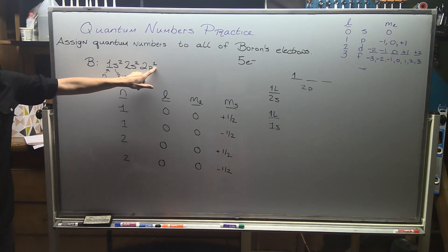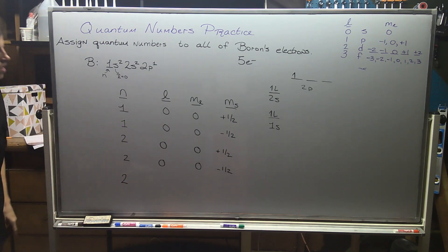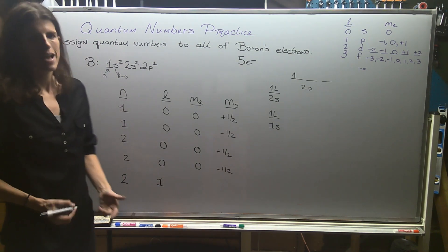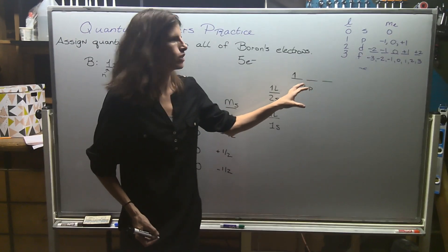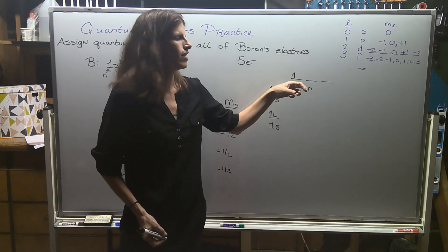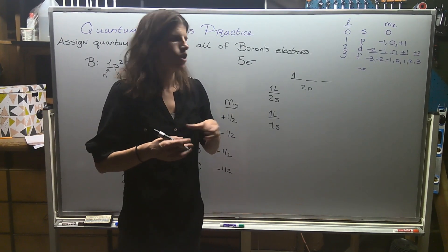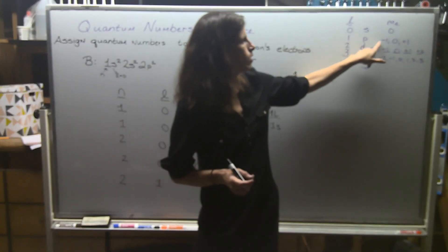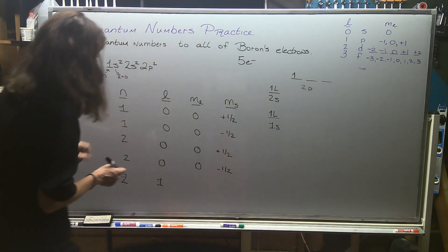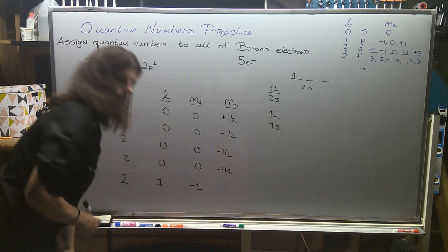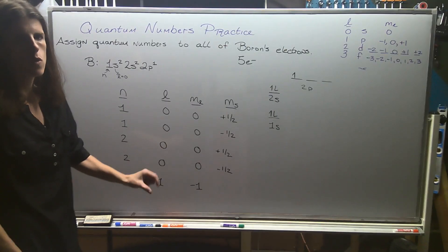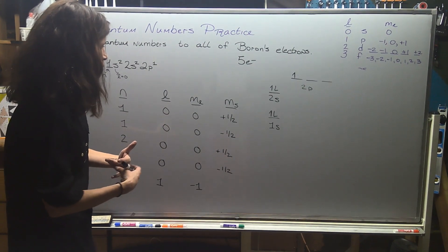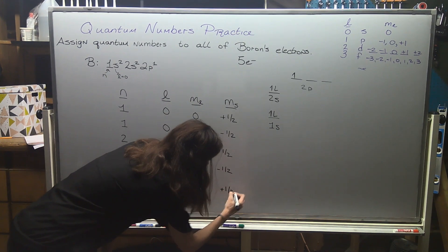The fifth and last electron is in a 2p orbital: n equals 2 and l equals 1. For ml there's no direct correlation telling us which specific orientation — the allowed values are negative 1, 0, or positive 1 — so your guess is as good as mine. I'll arbitrarily choose negative 1, but you could pick 0 or positive 1. Same thing with spin: I drew it going up but it's arbitrary — you could do plus one half or minus one half in that position.